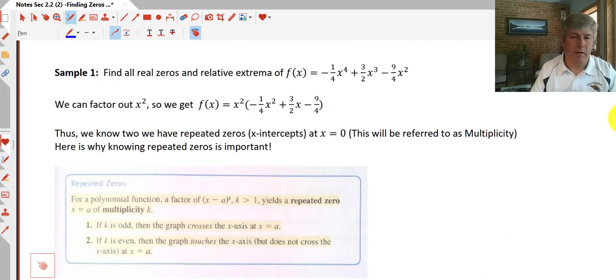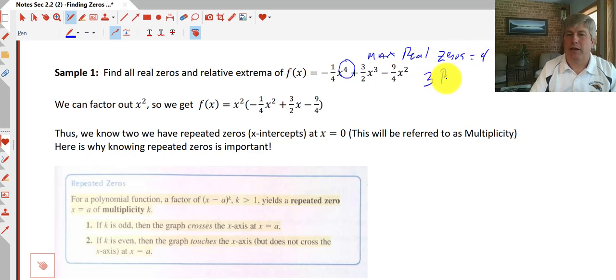So let's take a look at sample one. We want to find all the real zeros and relative extrema of this function: negative one-fourth x to the fourth plus three halves x cubed minus nine-fourths x squared. So we know for sure our maximum real zeros is four. We also know that this will have up to three bumps, or three max and mins, relative max and mins.